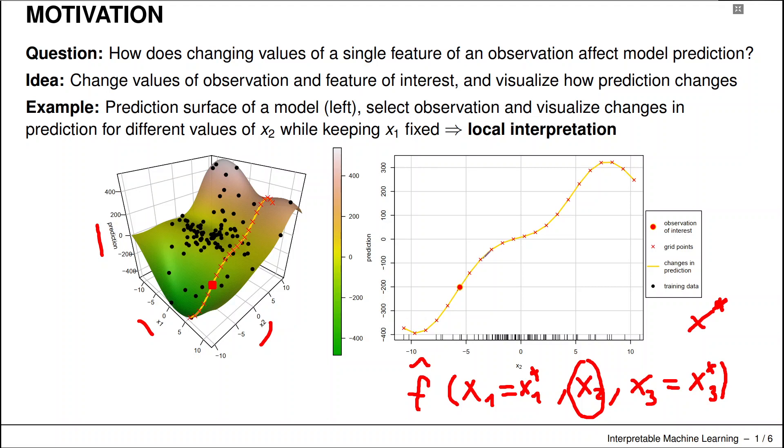We've also on the right hand side plotted the other data points on that ICE curve, and that gives us a reasonable form of local interpretation.